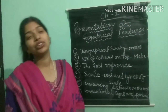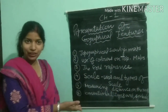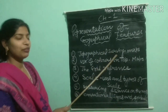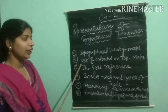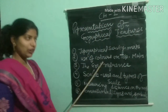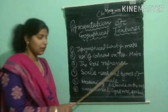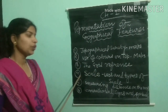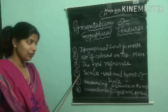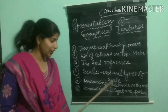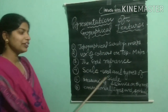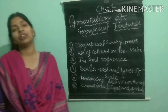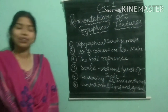In this chapter we shall do various topics. The first is topographical survey maps. The second is use of colors on topographical maps. The third is the grid reference. Fourth is scale — uses and types of scale. Fifth is measuring distance on the map. And last is conventional signs and symbols.